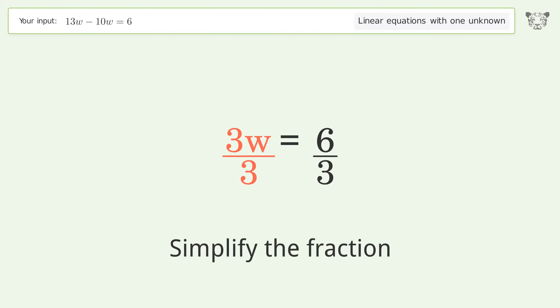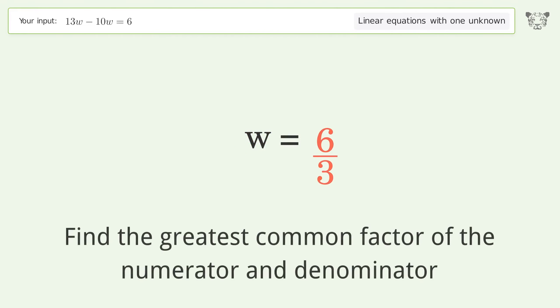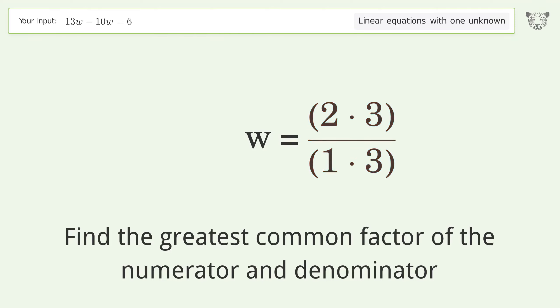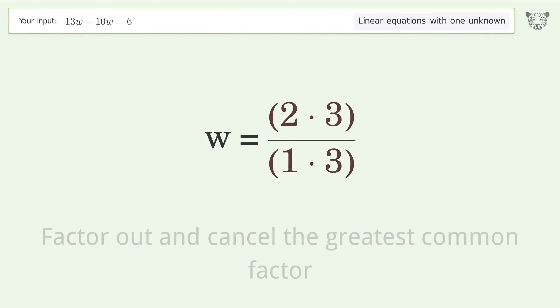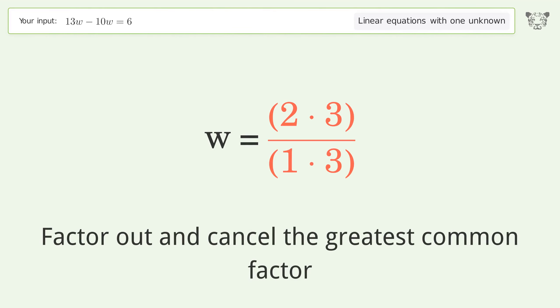Simplify the fraction by finding the greatest common factor of the numerator and denominator. Factor out and cancel the greatest common factor.